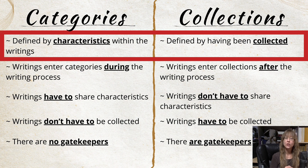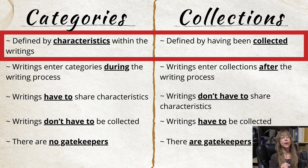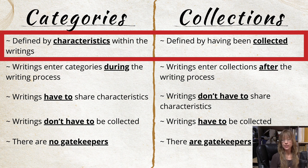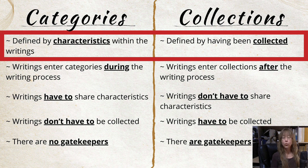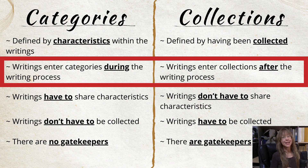Categories of writings are defined by characteristics present within the writings themselves. For example, if your category is a linguistic category — say, English literature — then being written in English is the relevant characteristic embodied within the writing. Notice the characteristic is something embodied within the writing, not something that happens to the writing from outside of it. Collections, on the other hand, are defined by having been collected. In order to have a collection of writings you would first have to collect them, and the fact that you've collected those writings is what makes them a collection.